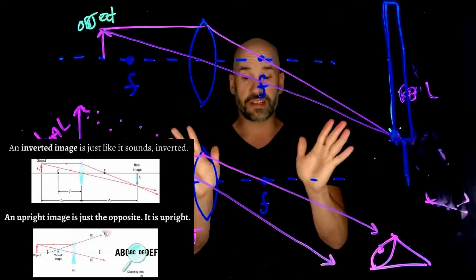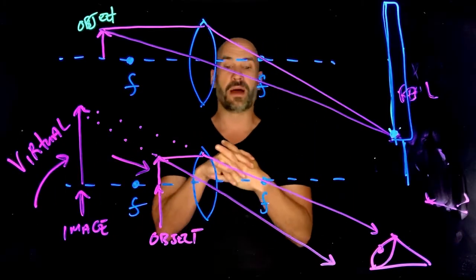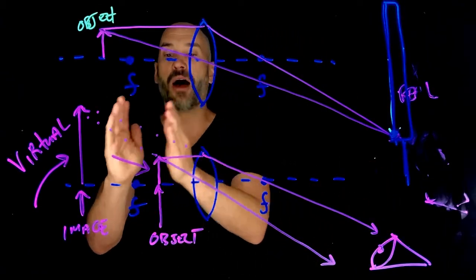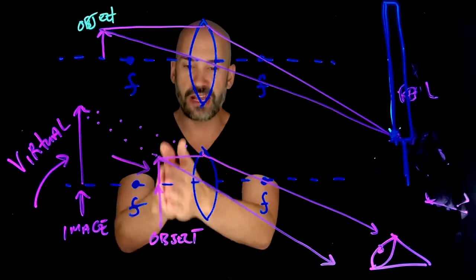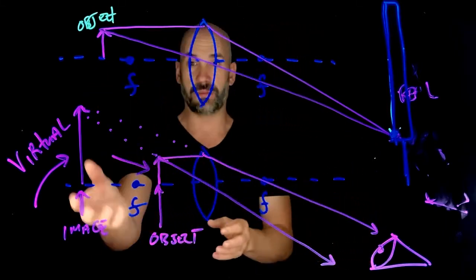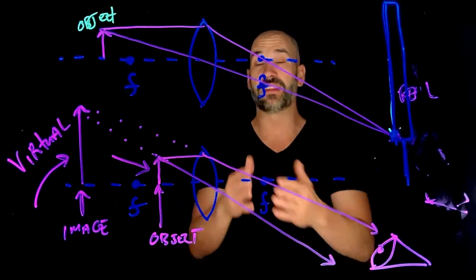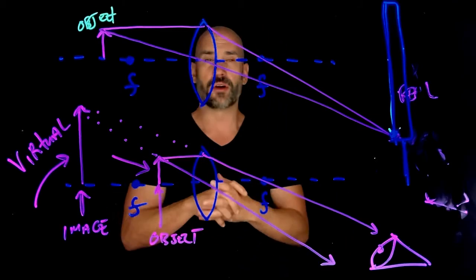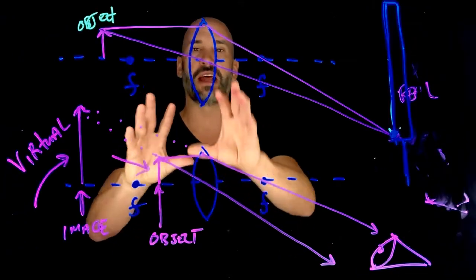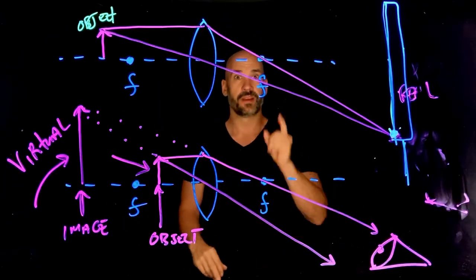So those are the kinds of images. When we get back to the next video, we're going to look at different lens situations and how changing the location of the object is going to change the location of the image and how changing the location of the object can change the kind of image that the lens will form. So the next video is going to be basically a crash course in all the different situations that you can have with respect to both converging and diverging lenses. I'll see you there.